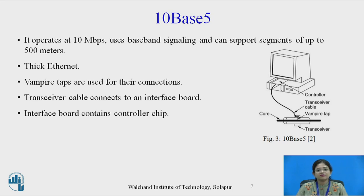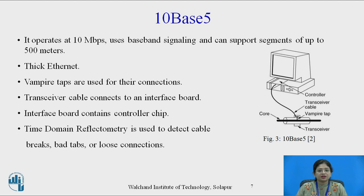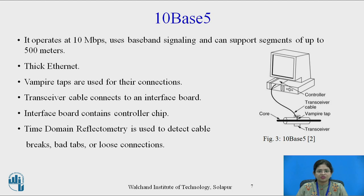The transceiver cable consists of five individual twisted pair cables: two are for data in and out, two are for control signals in and out, and one provides power to the transceiver. Time Domain Reflectometry (TDR) is used to detect cable breaks, bad taps, or loose connections. A pulse of known shape is injected into the cable; if it hits an obstacle or the cable end, it generates an echo. The time interval between sending the signal and receiving the echo identifies the origin of the break.